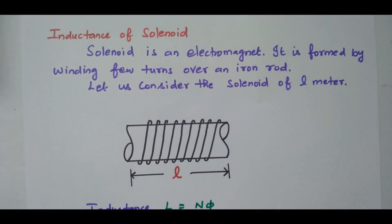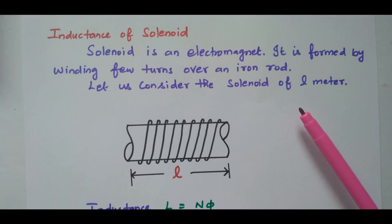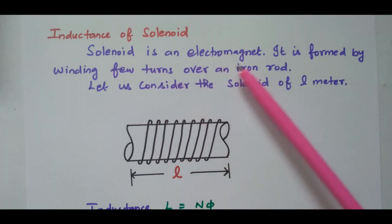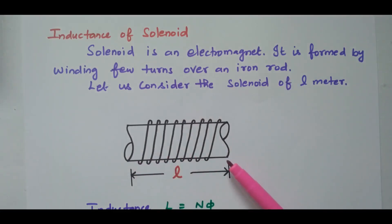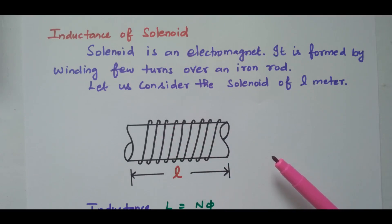Welcome viewers. In this video we will see the inductance of solenoid and toroid followed by problems. A solenoid is nothing but an electromagnet — one iron rod is available over which the coil is wound. When current flows through the coil, it becomes an electromagnet. We are going to identify the expression for inductance of this solenoid.